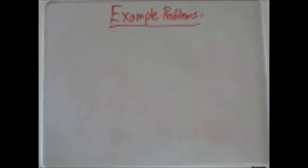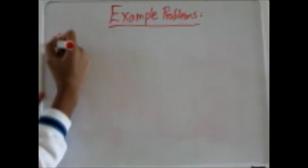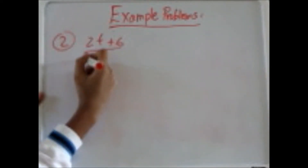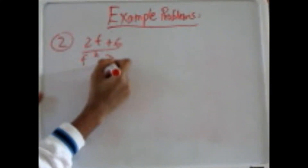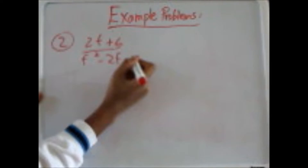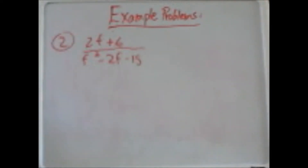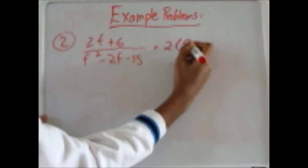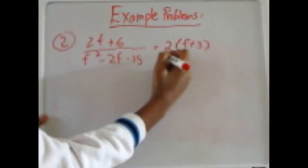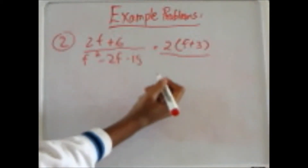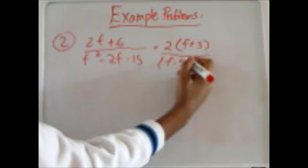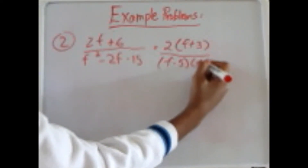Our second example problem is 2f plus 6 over f squared minus 2f minus 15. Our first step is to factor out. On the top, we can factor out 2, leaving us with f plus 3. On the bottom, after we use the big X method, we get f minus 5 times f plus 3.